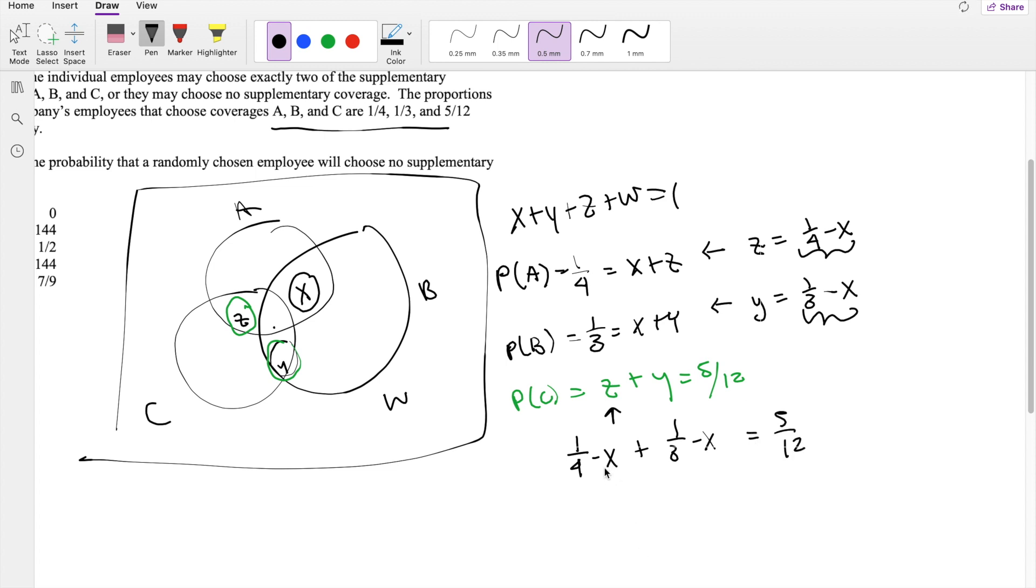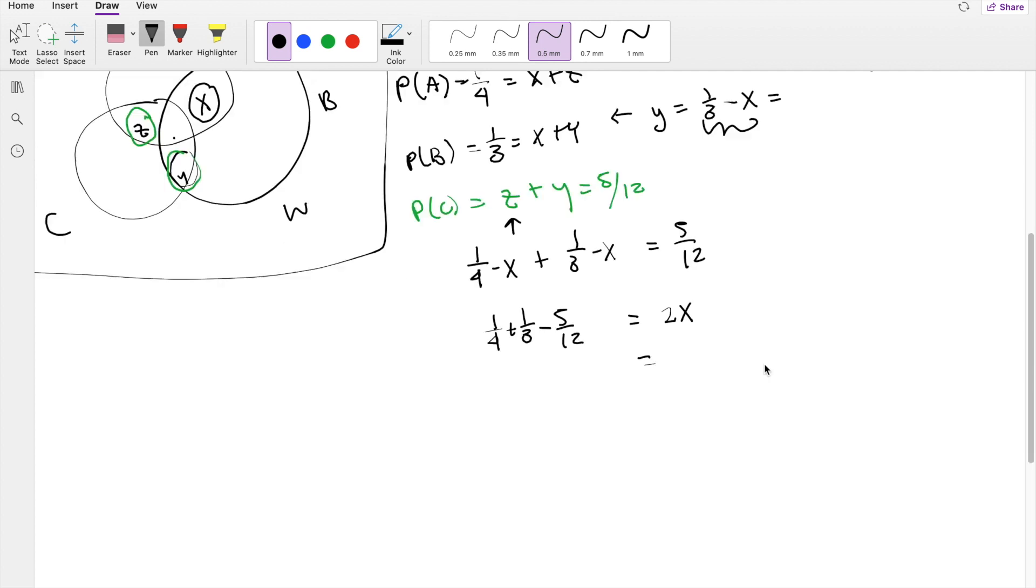So then we know that two-X is equal to one-fourth plus one-third minus five-twelfths. So you get that two-X is equal to one-sixth. So X must be equal to one-twelfth.